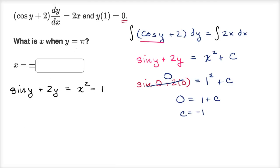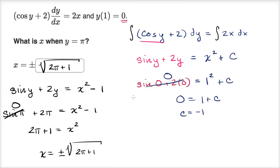And now what is x when y is equal to pi? So sine of pi plus two times pi is equal to x squared minus one. Sine of pi is equal to zero, and so we get, we can add one to both sides, and we get two pi plus one is equal to x squared, or we could say that x is equal to the plus or minus square root of two pi plus one. So I would write the plus or minus square root of two pi plus one, and we're done.